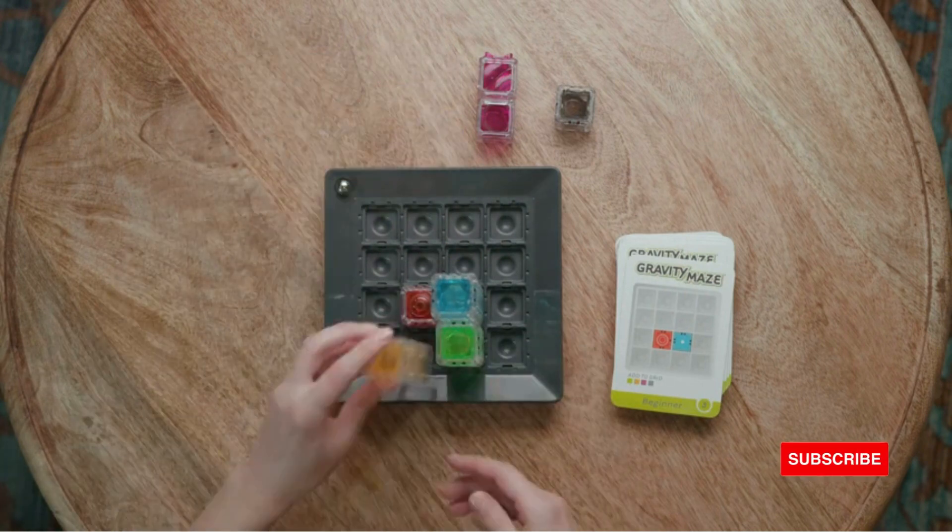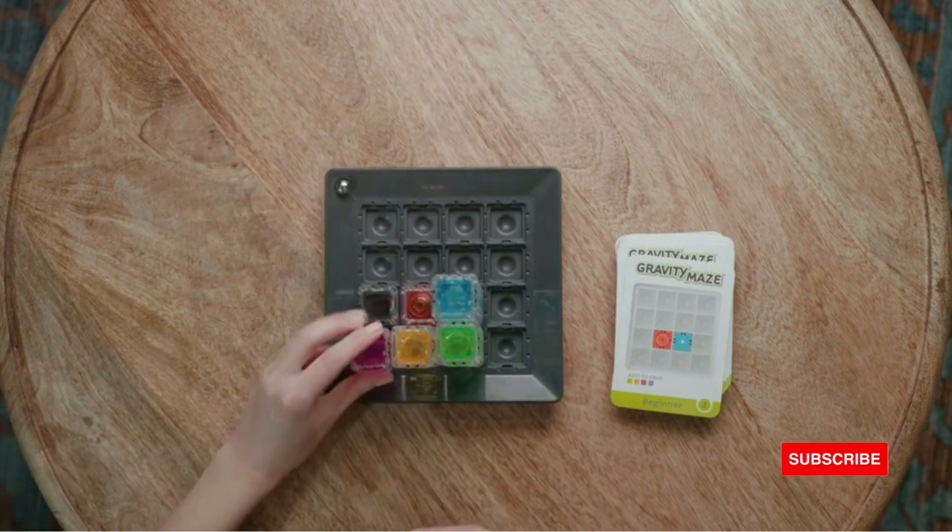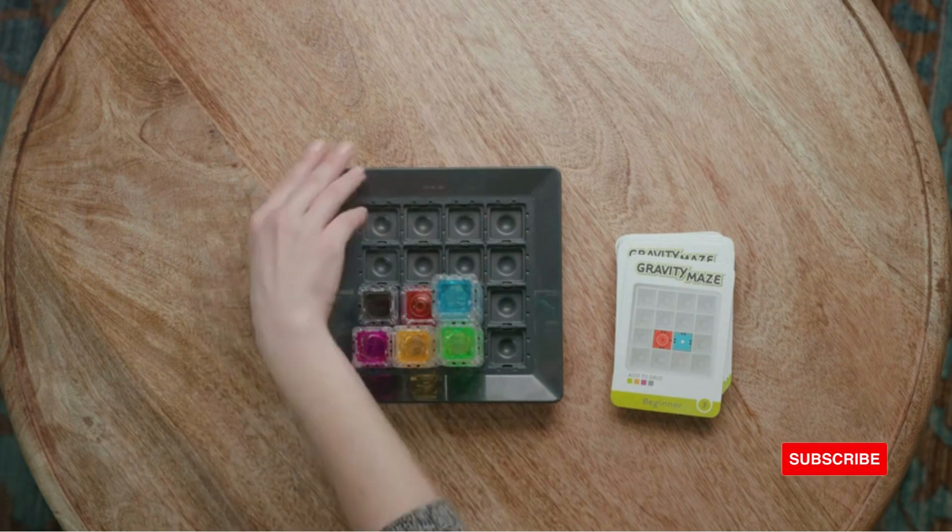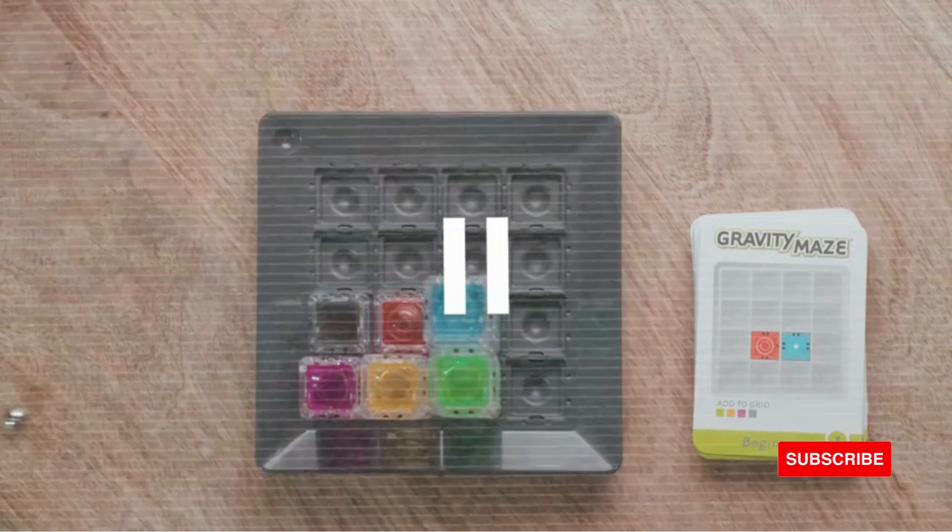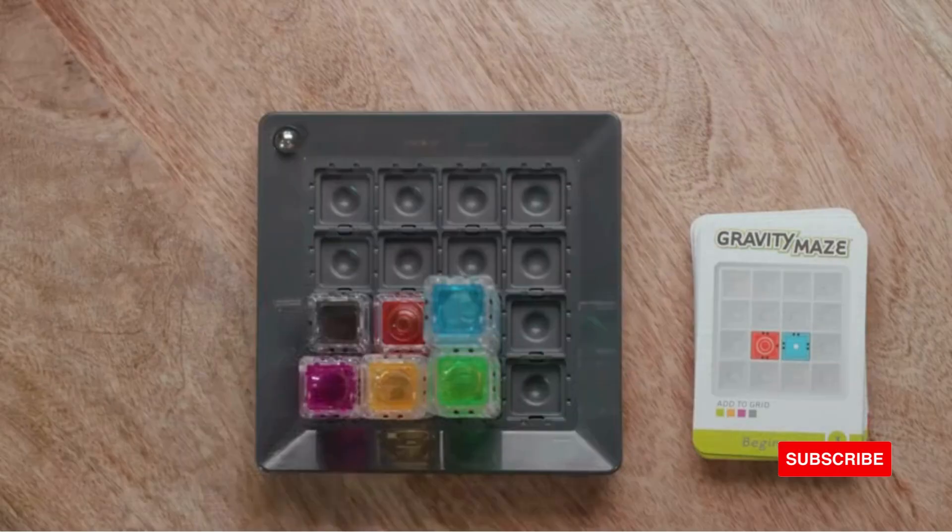Now you can experiment with building a path for your marble. When you're ready, give it a try by dropping your marble at the starting position, which is indicated on your challenge card with a white dot. If the marble doesn't reach the target, it's time to retrace your steps and figure out what went wrong.